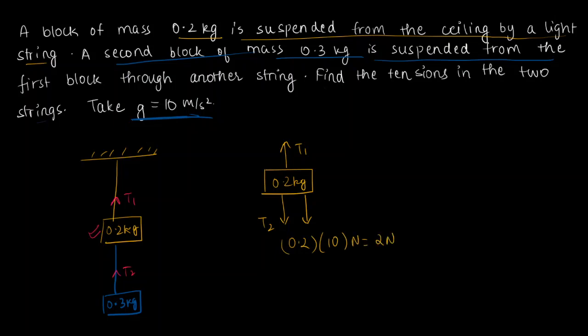And for the second block, you just have the tension force T2 acting. This is the 0.3 kilograms block, and you have the tension force T2 acting and downward gravity force that will be equal to 0.3 times 10 newtons. This is equal to 3 newtons.